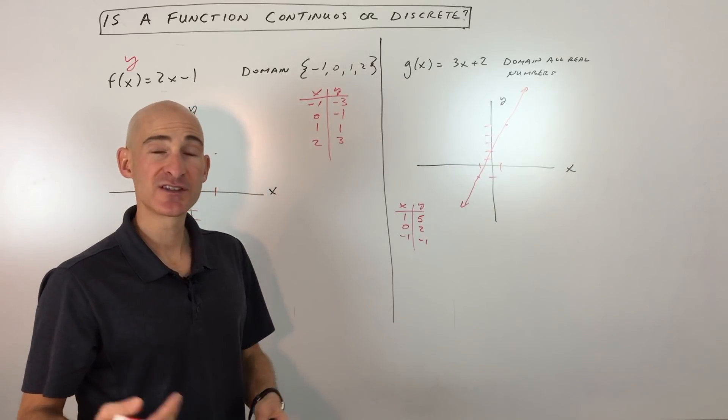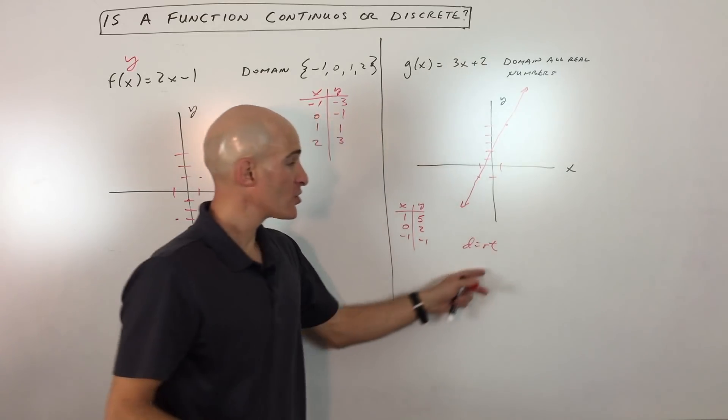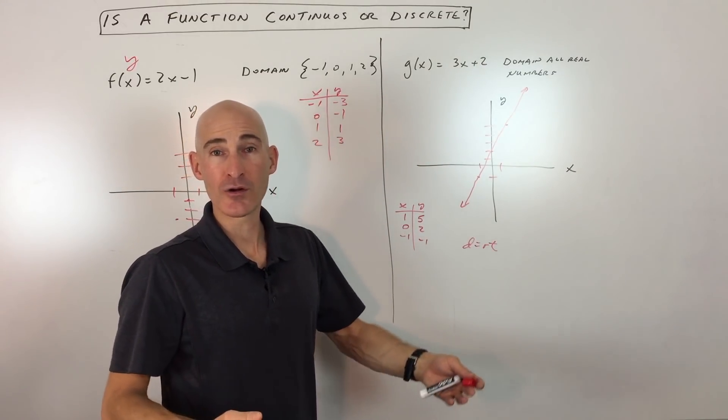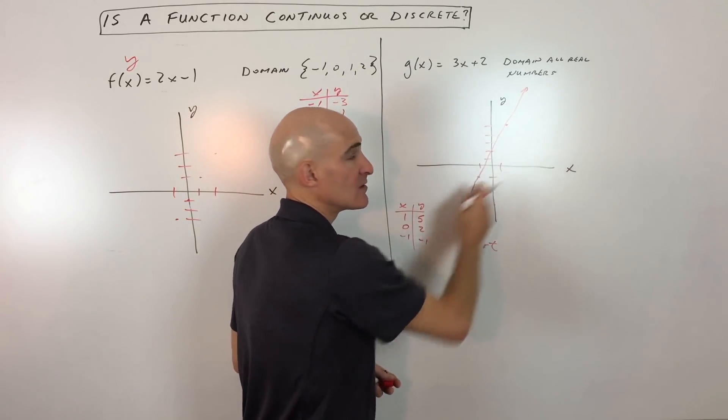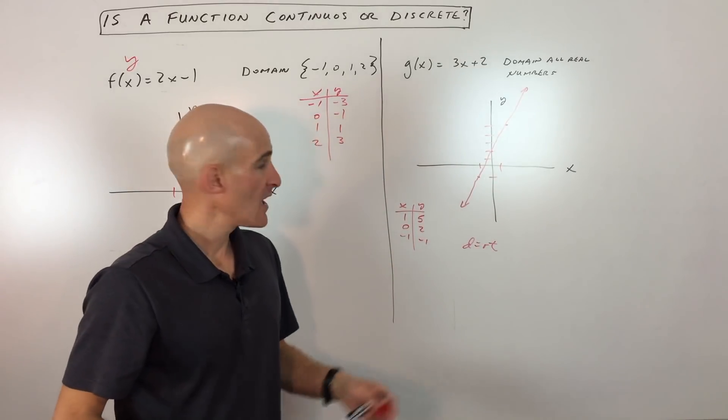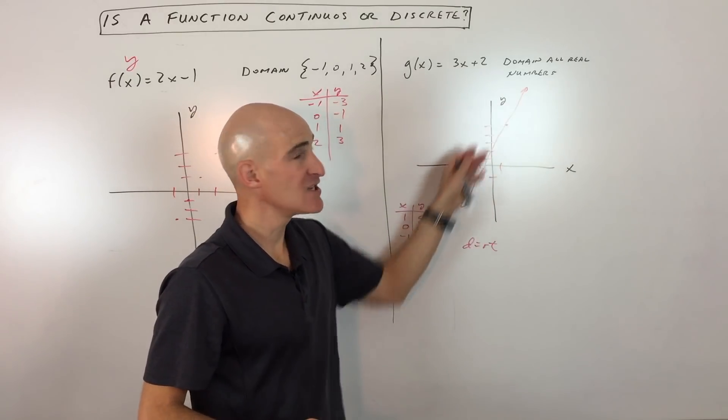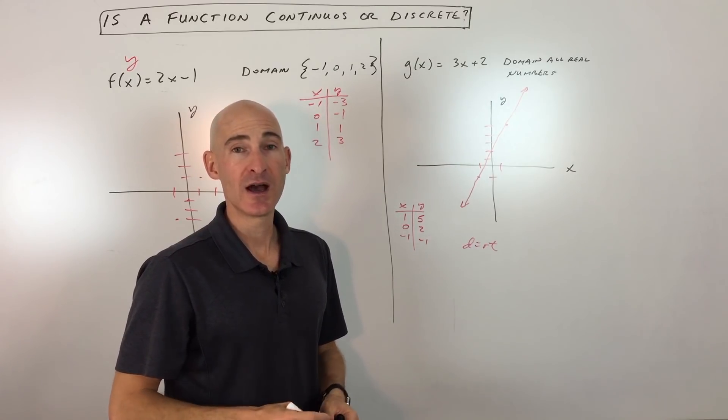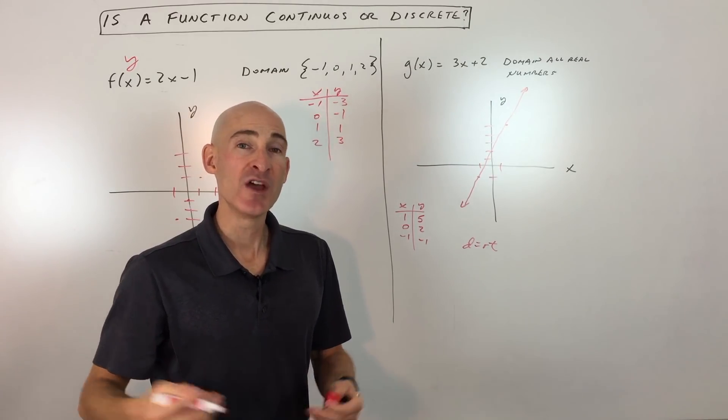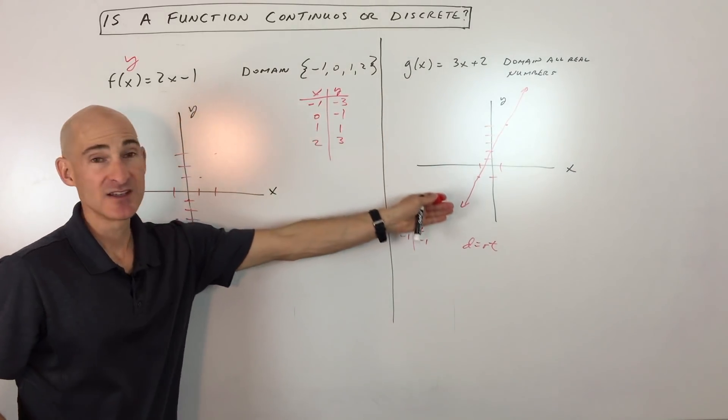Whereas if you're maybe traveling, let's say like a problem where you have distance equals rate times time, you could travel for a minute or an hour or a day, you could be any one of those values along that spectrum of domains, those inputs. And so the range could be anything along those spectrum of outputs, and you would have a continuous graph. It could be any point along that line, and it would make sense in the context of the problem. So I hope this helps you understand a little bit better the difference between discrete and continuous.